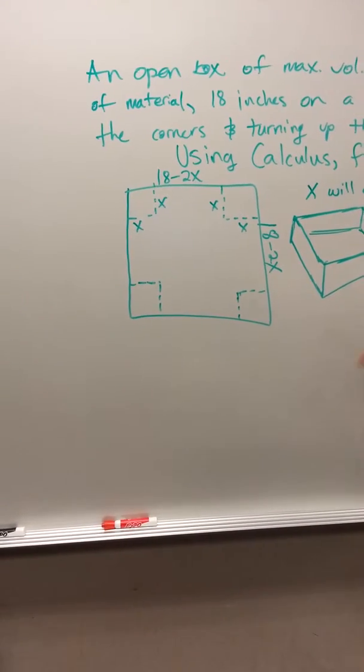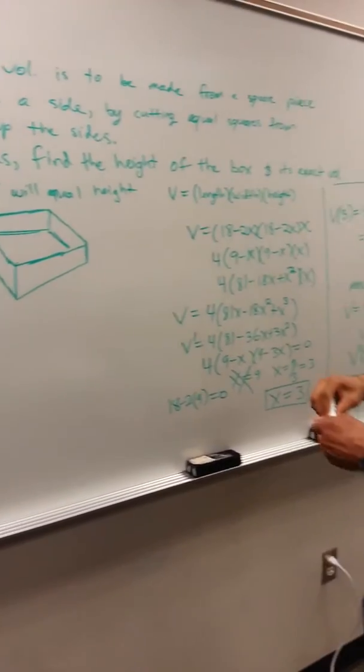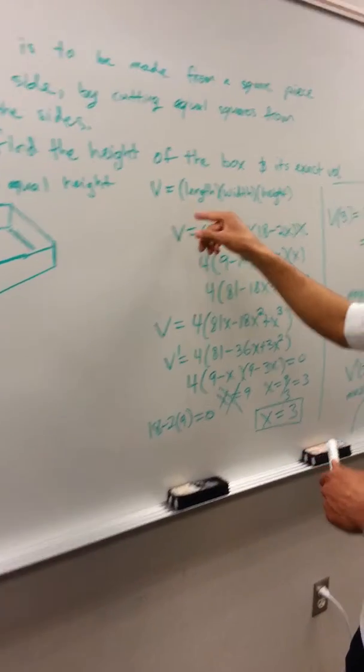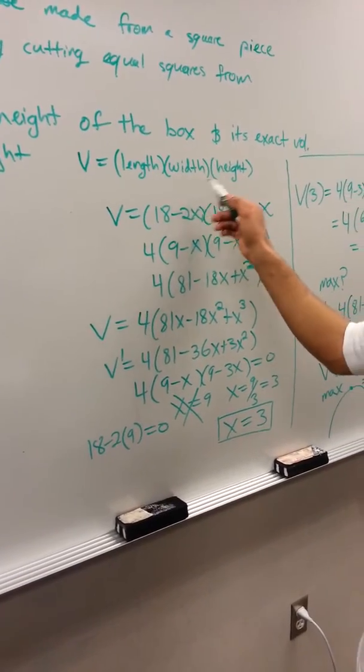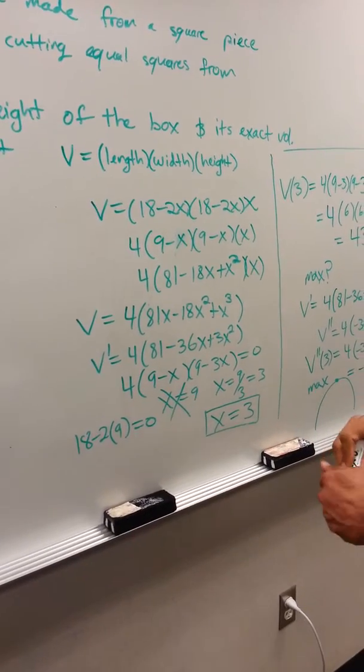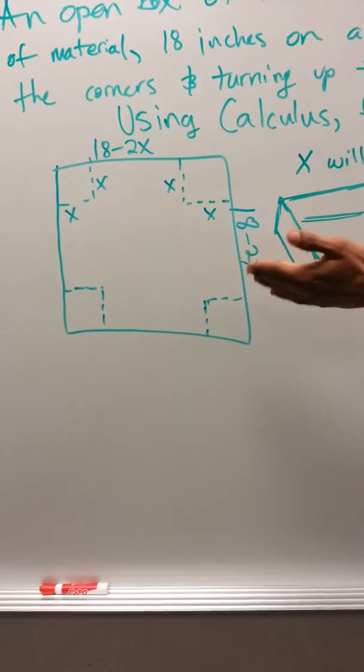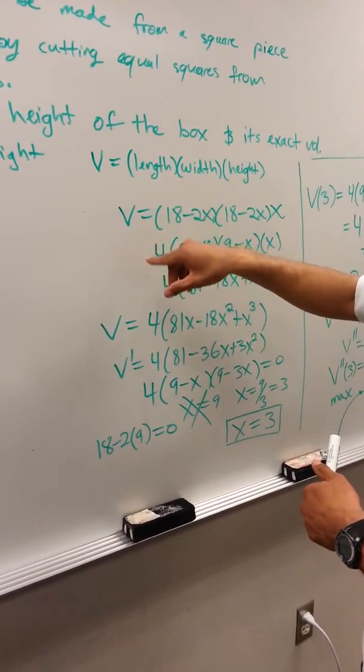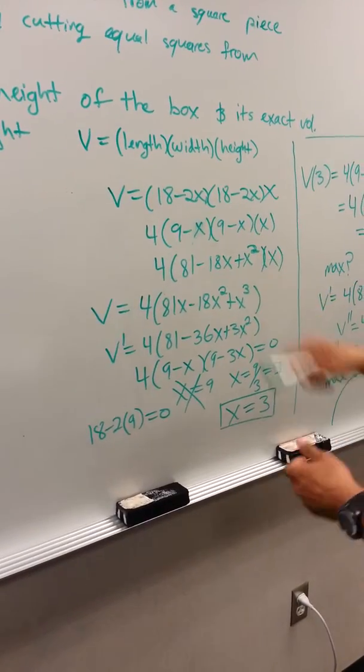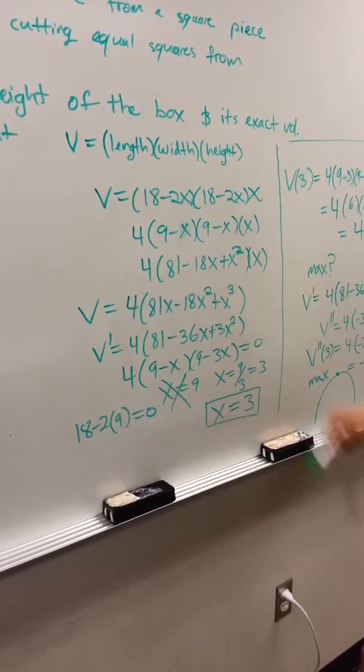Since we're dealing with volume, we use the equation volume equals length times width times height. I substituted what I had set up, which gives us V = (18-2x) times (18-2x) times x. There's our length times width times height, so all we have to do is simplify things down.